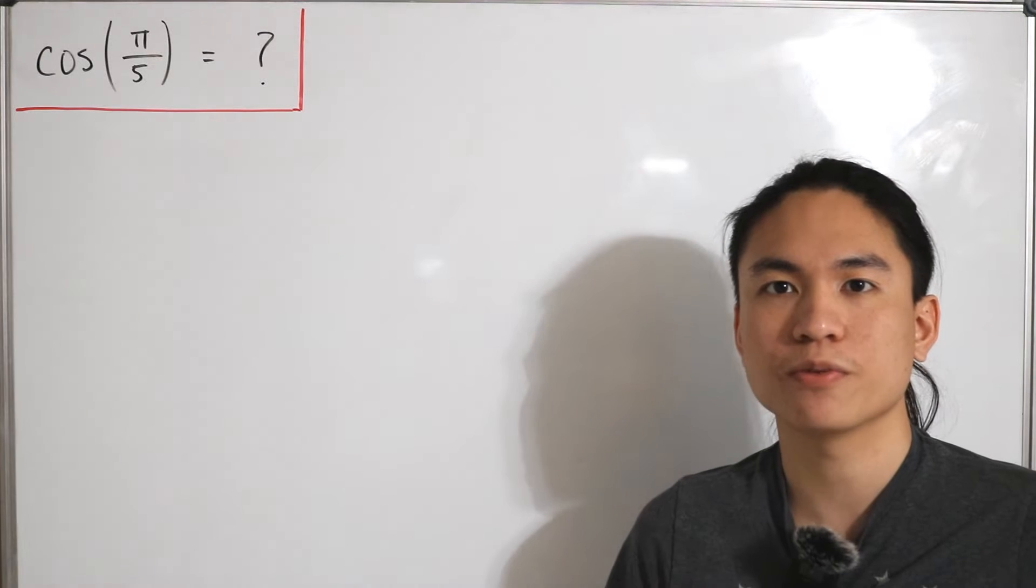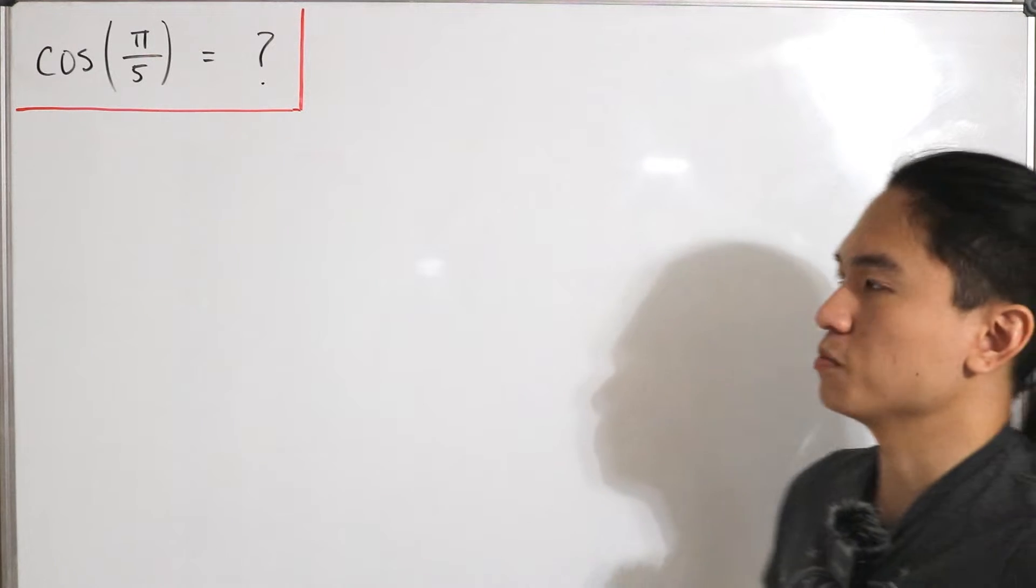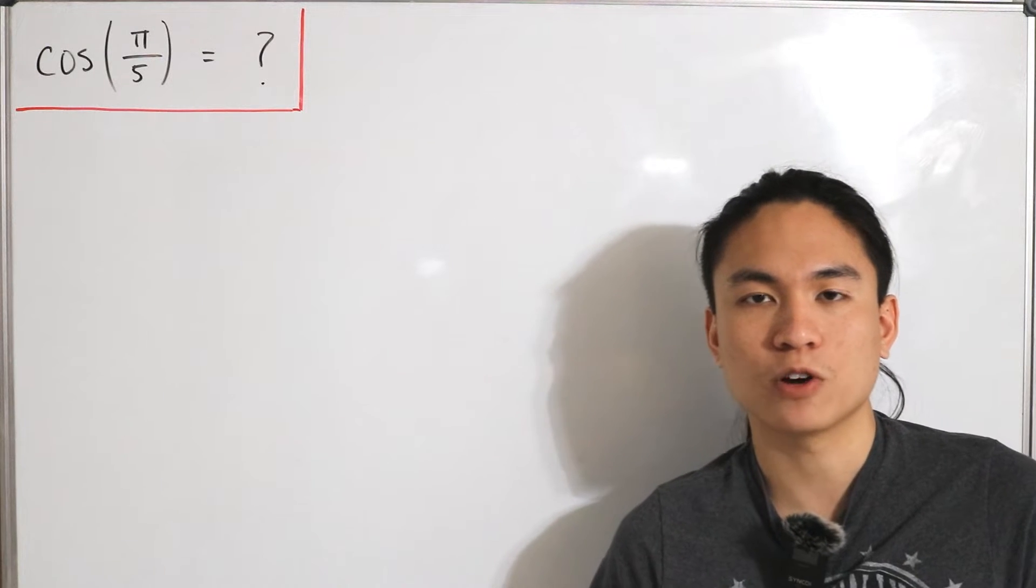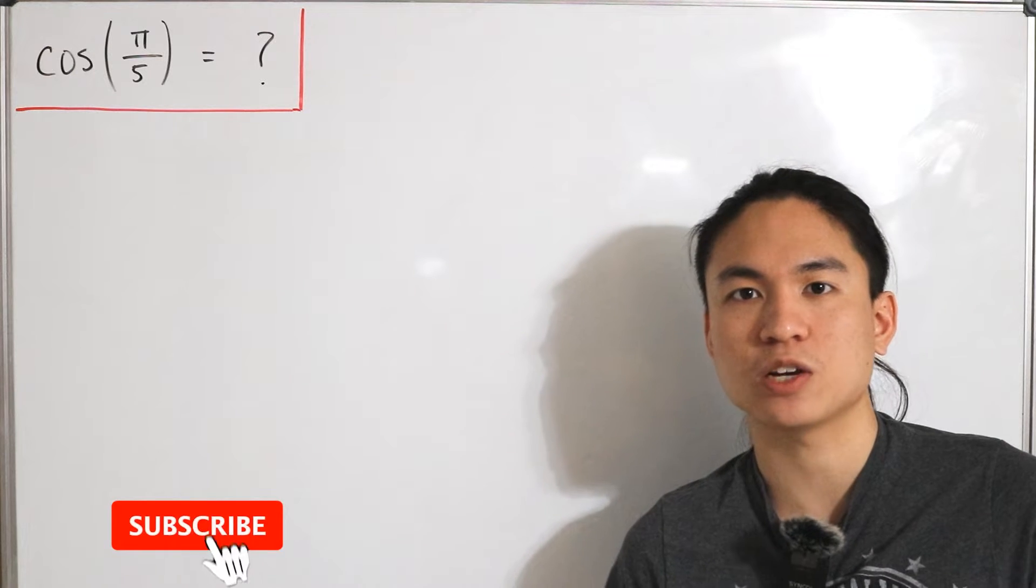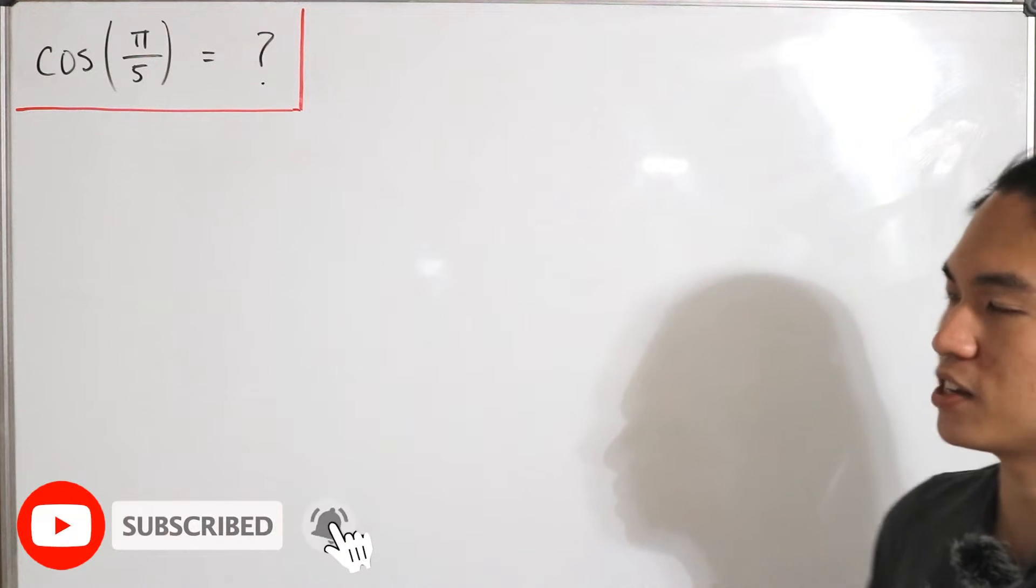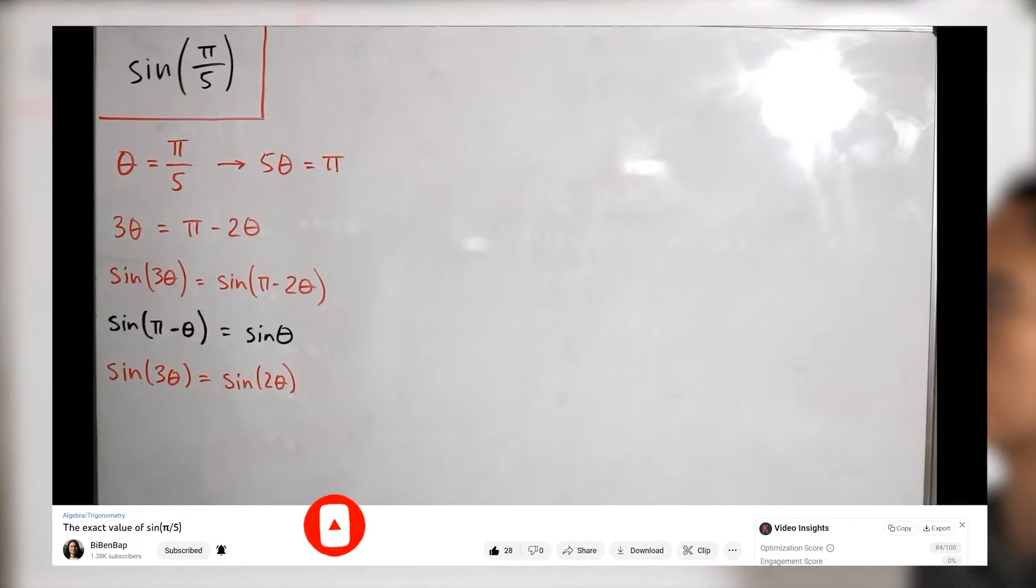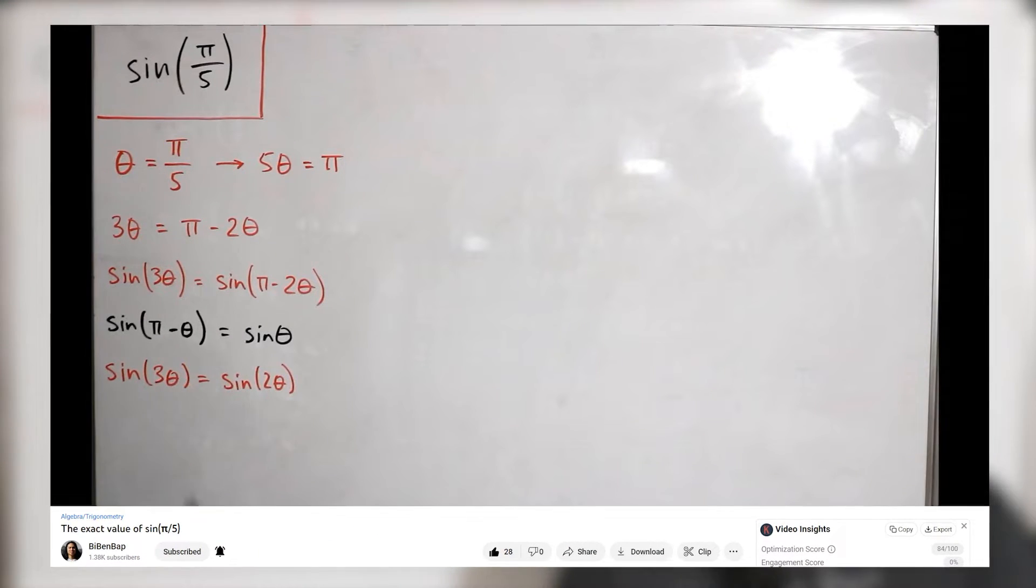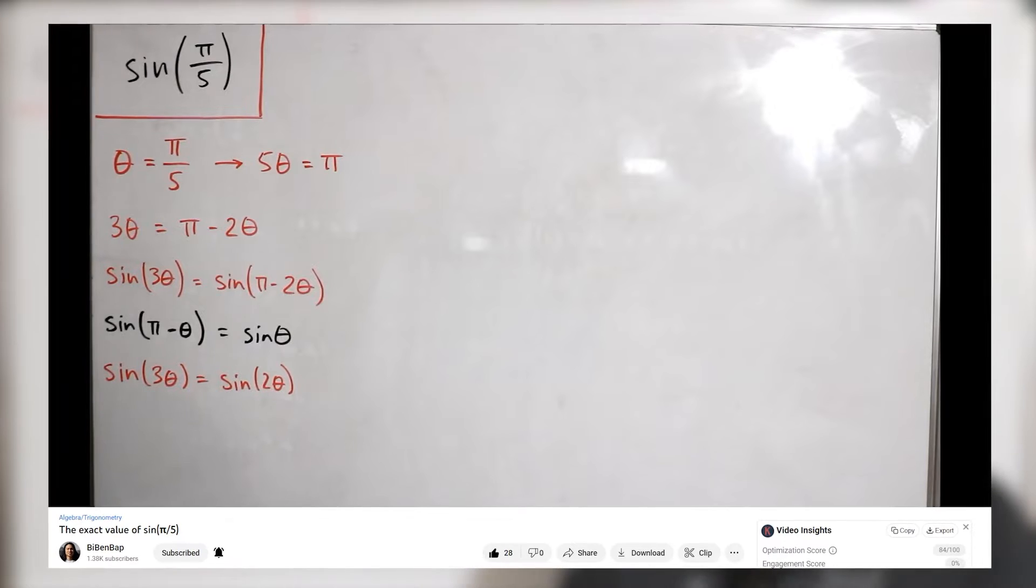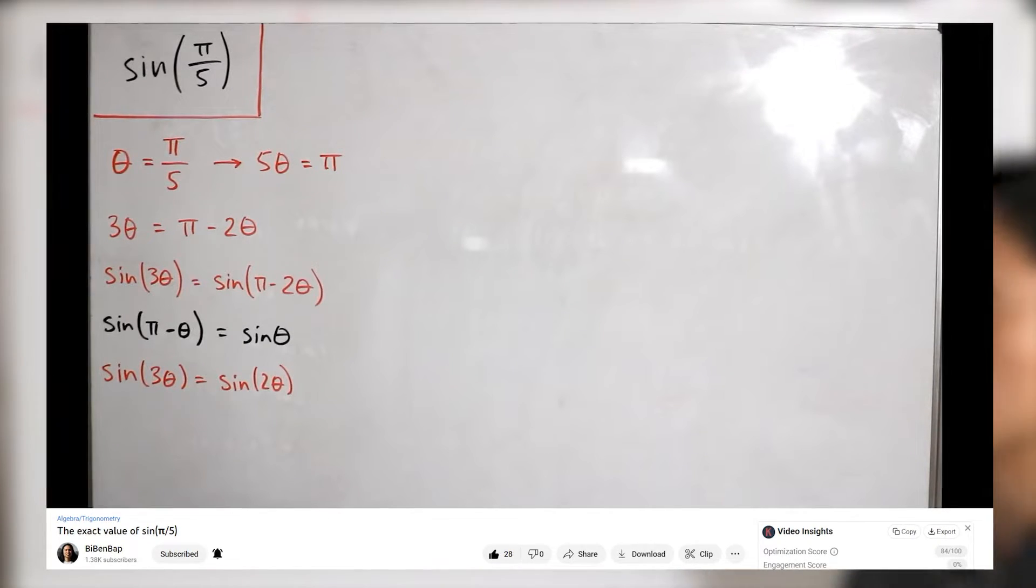Welcome back to another video. Today's video is simple: we just want to find the exact value of cosine of π/5. In the past, I did a video solving the exact value of sine of π/5. If you want to check that out, the link is in the description below.